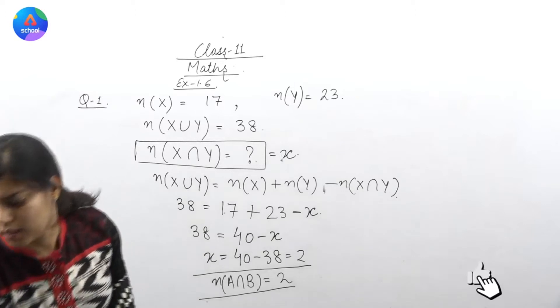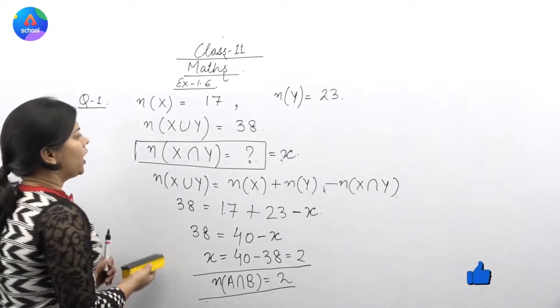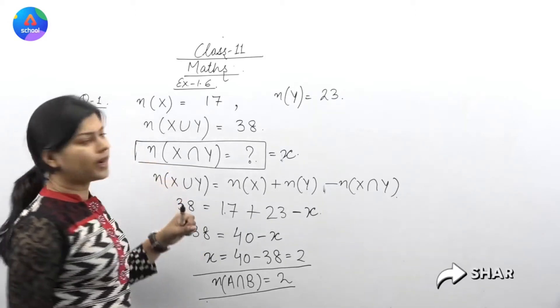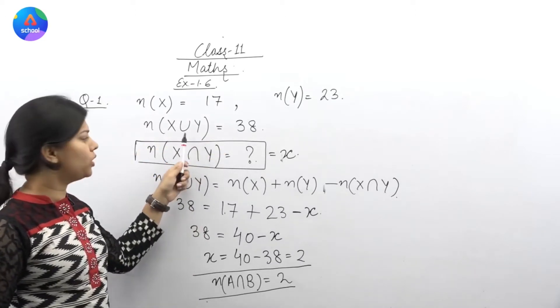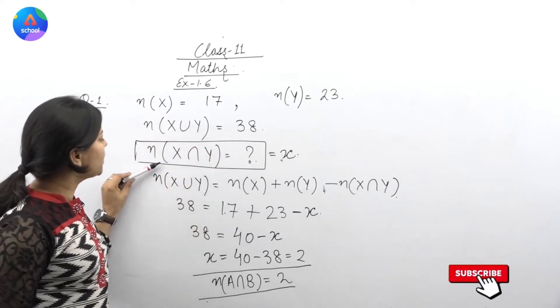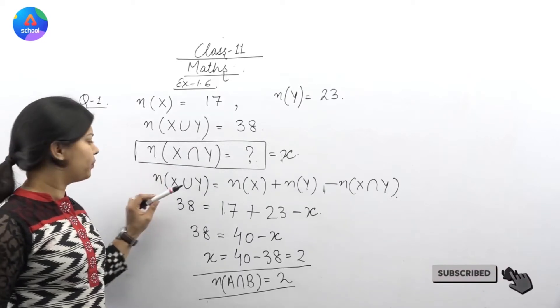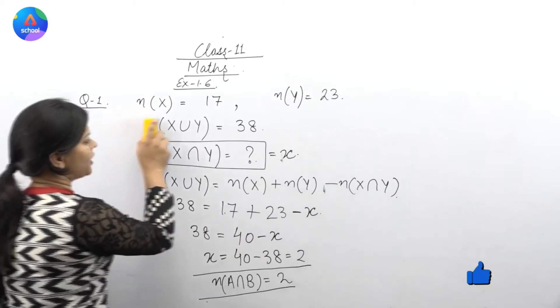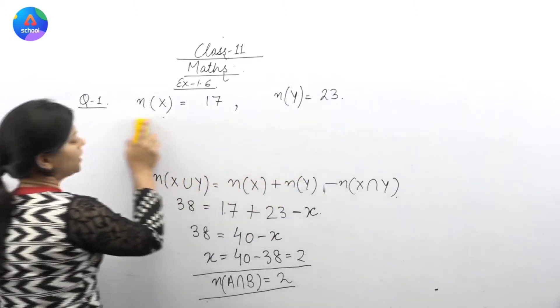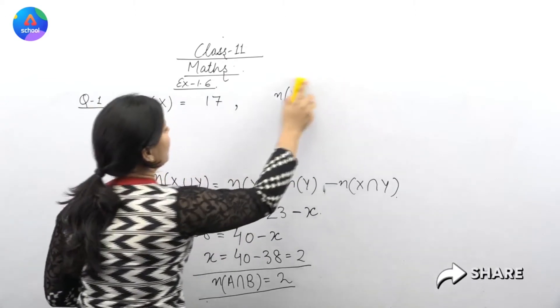In which what did we see? We were given three things: n of X, n of Y and n of X union Y. And we had to find out n of X intersection Y. What did we do? We used this formula which we have already done last time. We had seen how we get this formula.